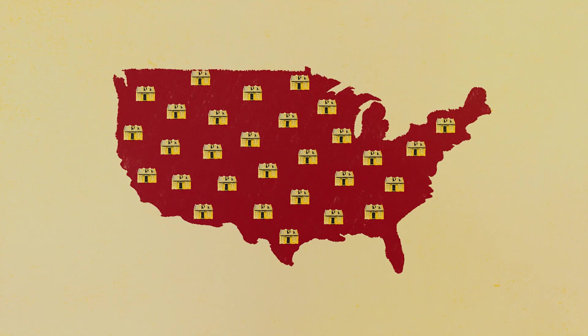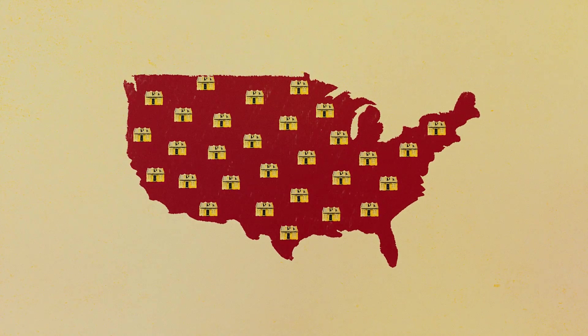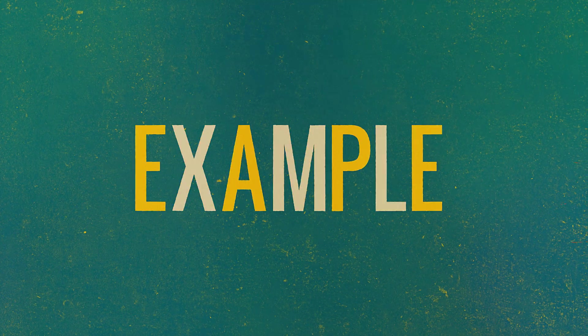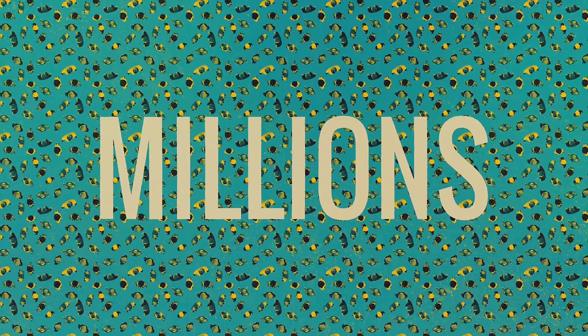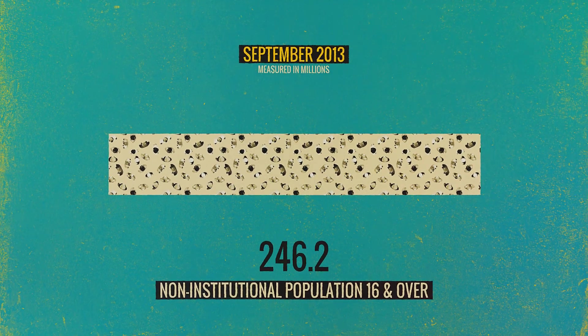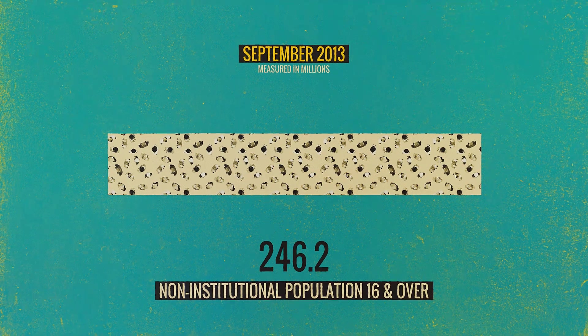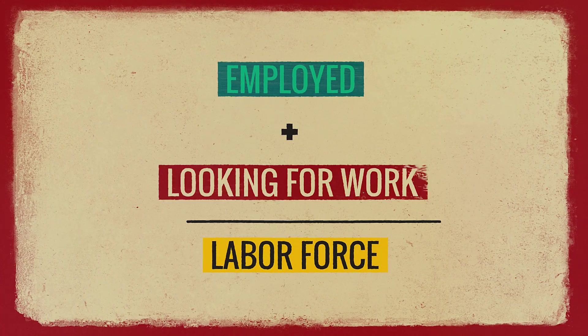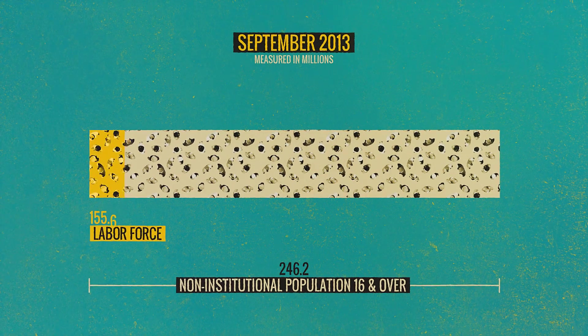Nonetheless, you have to have something like that in order to properly measure the amount of unemployment in the economy. Let's consider an example of people in September 2013, measured in millions. There were 246.2 million people in the non-institutional population 16 and over — institutions like jails, for example, are excluded. The labor force at that point, the sum of employed plus people looking for work, was 155.6 million.